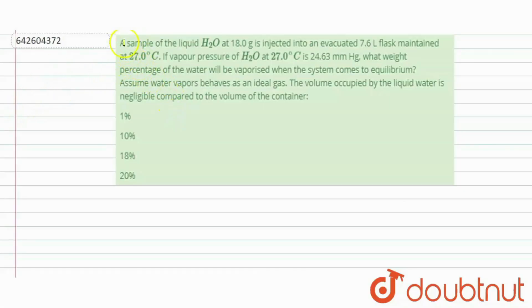The question says that a sample of the liquid H2O at 18 gram is injected into an evacuated 7.6 liter flask maintained at 27 degrees Celsius. If vapor pressure of water at 27 degrees Celsius is 24.63 mm Hg, what weight percentage of water will be vaporized when the system comes to equilibrium?